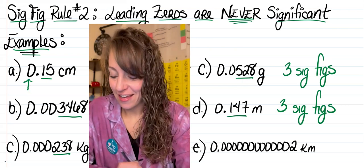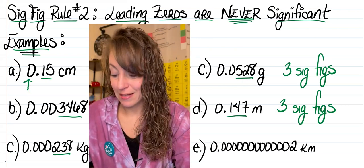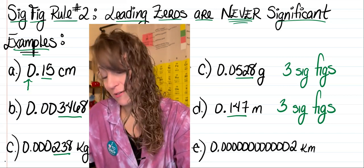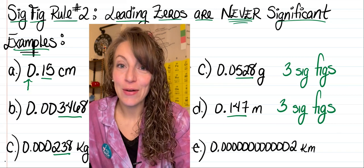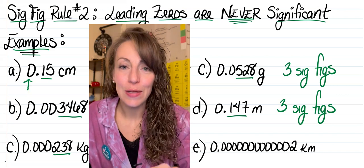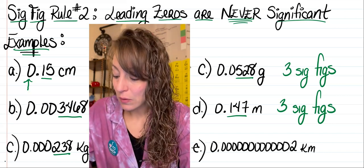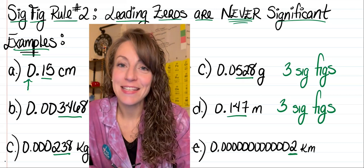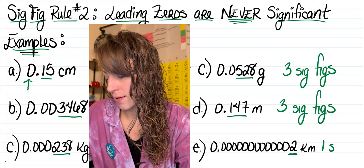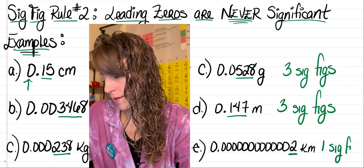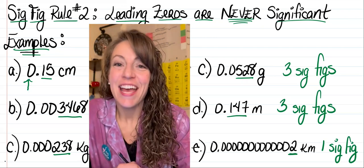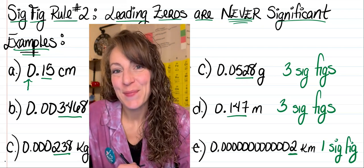Finally, in letter E, I've got 0.0000000002 kilometers. Even though there are all those zeros in that measurement, they're all leading zeros and all insignificant. The only significant figure in that measurement is that two, so it only has one sig fig. Hope this helps — continue to follow along for more chemistry concepts. Bye!